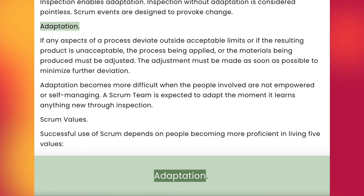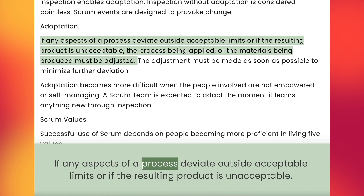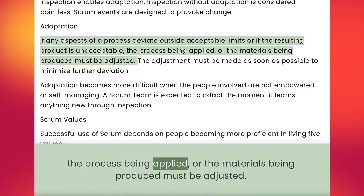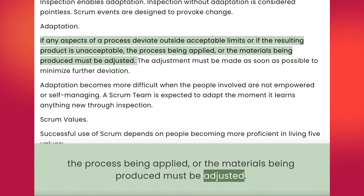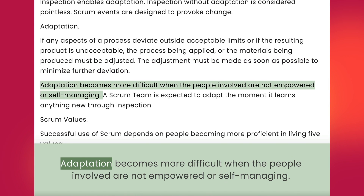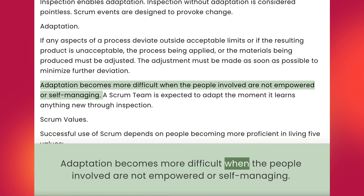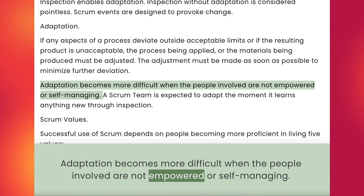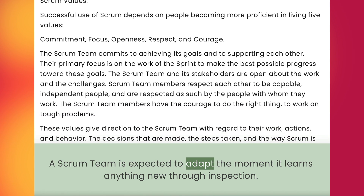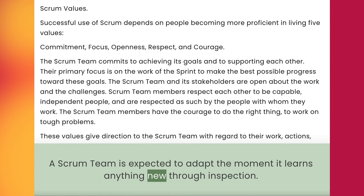Adaptation. If any aspects of a process deviate outside acceptable limits or if the resulting product is unacceptable, the process being applied or the materials being produced must be adjusted. The adjustment must be made as soon as possible to minimize further deviation. Adaptation becomes more difficult when the people involved are not empowered or self-managing. A Scrum team is expected to adapt the moment it learns anything new through inspection.